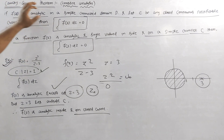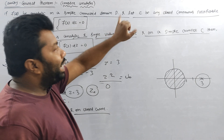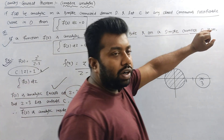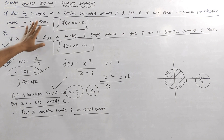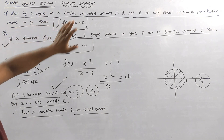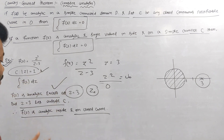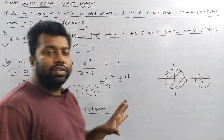F(z) is an analytic function in a simply connected domain D. If C is any closed continuous rectifiable curve, the integration of f(z) dz is equal to 0. What is the answer?